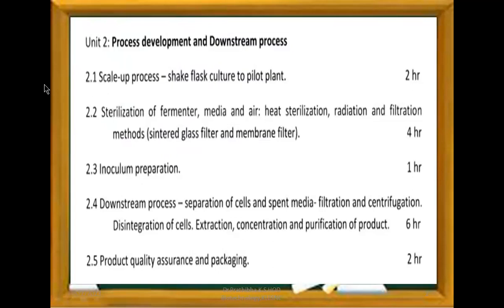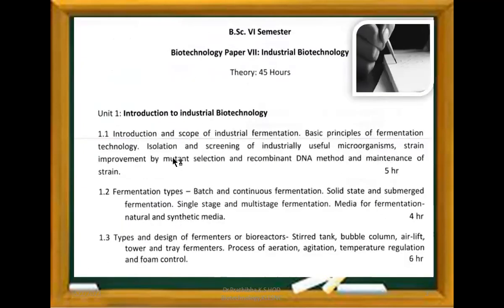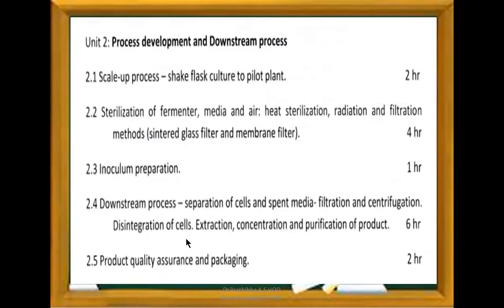Next, Unit 2 covers Process Development and Downstream Processing. Unit 1 can be considered as upstream processing, whereas Unit 2 falls under downstream processing. Unit 2.1 is scale-up process from shake flask culture to pilot plant. Unit 2.2 is sterilization of fermenter, media and air — including heat sterilization, radiation, and filtration methods such as sintered glass filter and membrane filter.